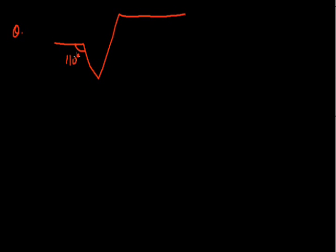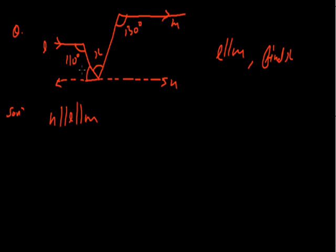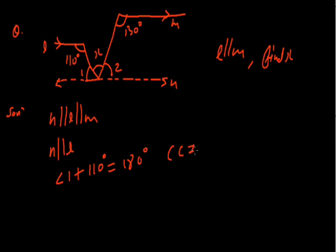In the next problem, line L is parallel to M. The angle at L is 110 degrees and the angle at M is 130 degrees. We have to find angle X. We draw an auxiliary line through the vertex point P parallel to L and M, dividing the region into angle 1 and angle 2. Since the auxiliary line is parallel to L, angle 1 plus 110 equals 180 degrees, so angle 1 equals 70 degrees.